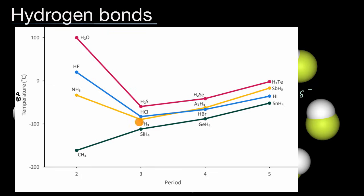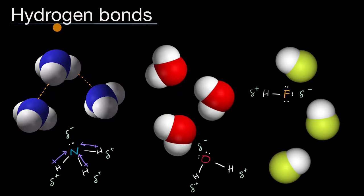Some of you might be wondering about molecules formed with period three or period four elements and hydrogen — they also don't have the same boiling point even with similar molar masses. That separation would be due to other forces, in particular dipole-dipole forces. But the spread is much higher for molecules formed with nitrogen and hydrogen, fluorine and hydrogen, and oxygen and hydrogen, because hydrogen bonds can be viewed as the strongest form of dipole-dipole forces — hydrogen bonds are a special case of dipole-dipole forces.